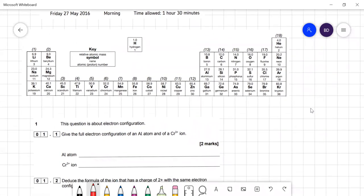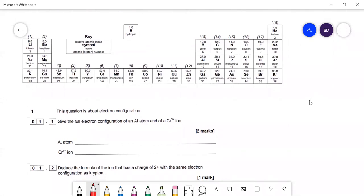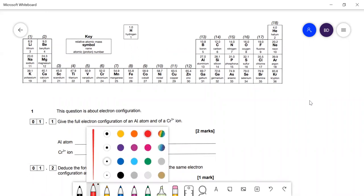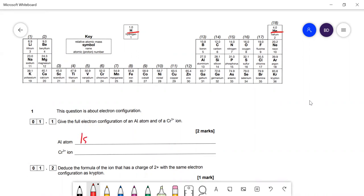This question is about electronic configuration. The full electronic configuration of an aluminum atom: 1s2, 2s2, 2p6, 3s2, and we've got one electron in 3p, so 3p1.